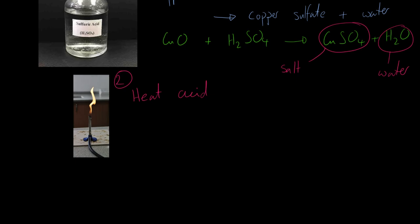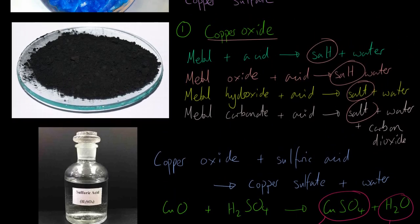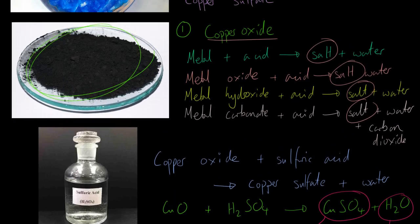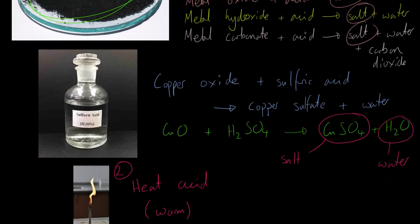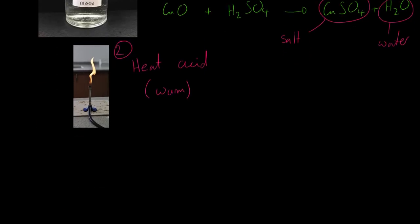Okay, not very much - I should say you warm the acid. Acids tend to give off quite unpleasant vapors if you heat them too strongly, so you're warming it just to encourage the reaction along. Once you've warmed up your sulfuric acid, you can start stirring in your copper oxide, and you will notice that it starts turning a lovely blue color. You are producing copper sulfate.